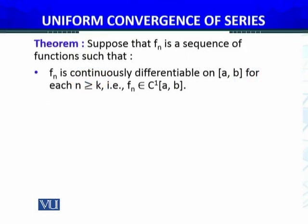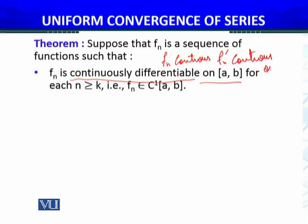So, the theorem states that: suppose fₙ is a sequence of functions such that the first condition is — fₙ is uniformly continuously differentiable on [a, b]. Continuously differentiable means that fₙ is not only continuous, but its first derivative fₙ' is also continuous on [a, b].